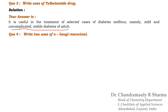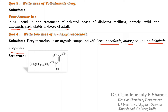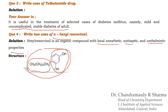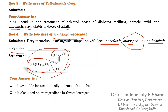The next question is: write two uses of hexylresorcinol. First we will see what is hexylresorcinol. Hexylresorcinol has local anesthetic activity, antiseptic, and anthelmintic properties. Its structure is just given on your screen — this is the resorcinol moiety and this is the hexyl moiety, that's why its name is hexylresorcinol. So your answer is: it is available for use topically on small skin infections because it has antiseptic properties, and it is also used as an ingredient in throat lozenges — for example, Vicks tablets taken during throat infection for throat soothing.